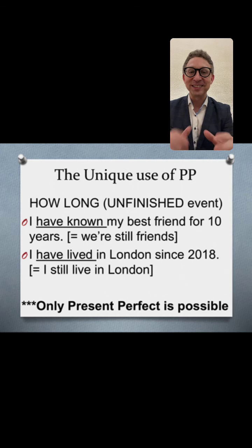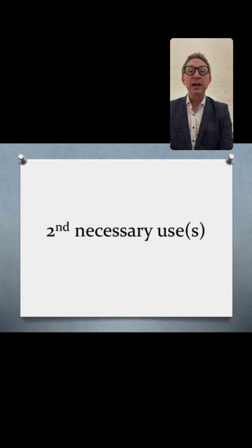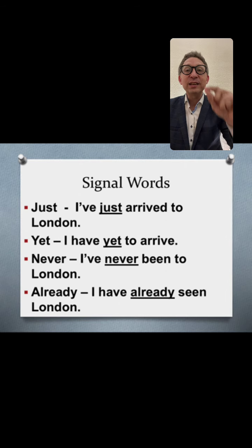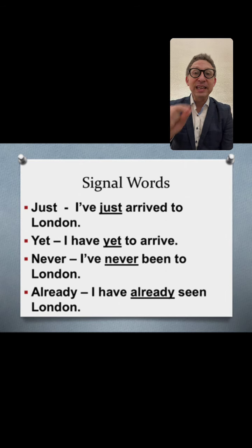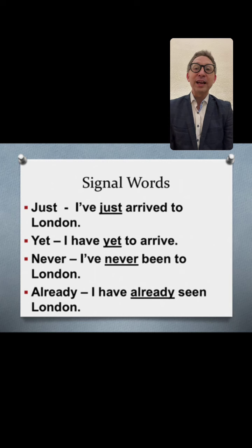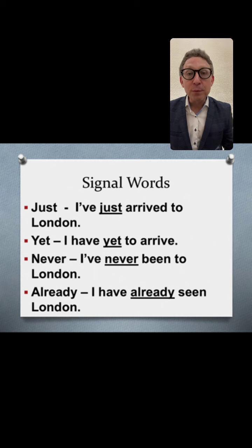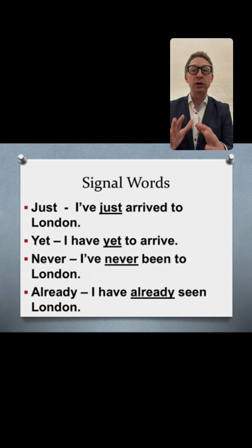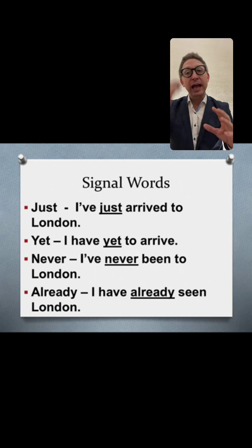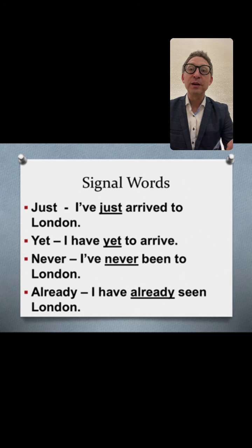The second necessary use is with signal words. With these words, you use present perfect. It's easier for the young learner — you just need to memorize a few words: just, yet, never, already — and associate them with present perfect. For example: I've just arrived to London.